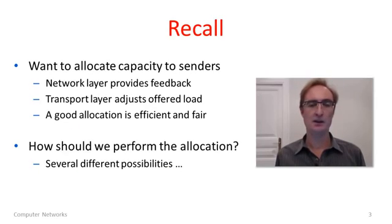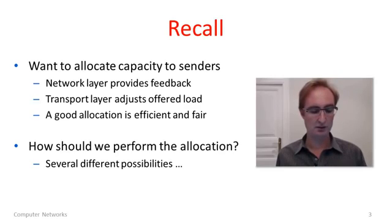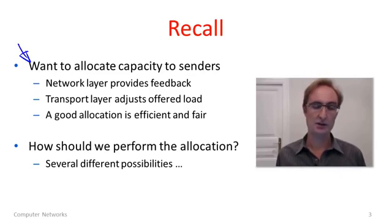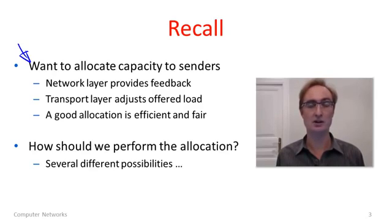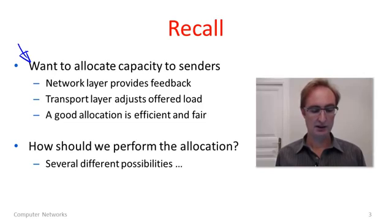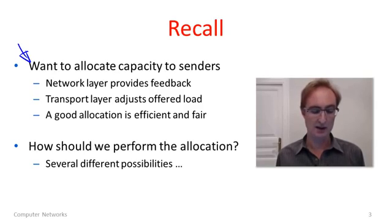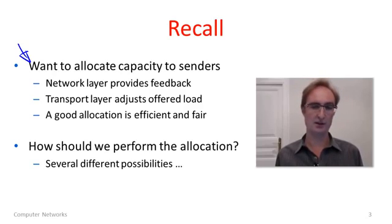Before we do that, I just want to remind you of some context for where we are on bandwidth allocation. What we're trying to do here in our network is allocate some of the capacity of the network to senders. We want an allocation to be efficient — using all of the network but not more than is there and causing congestion — and fair. Now any solution here is going to use feedback from the network layer, because that's how we'll find out if the network is congested or if there's spare capacity. It's also going to use the transport layer because that's the layer that controls the load that's put into the network.